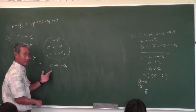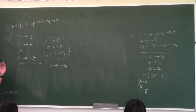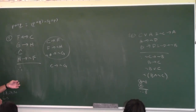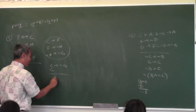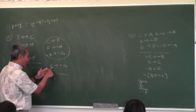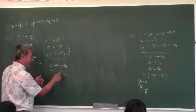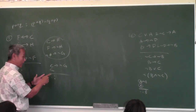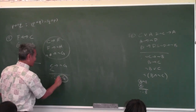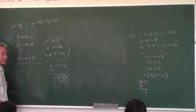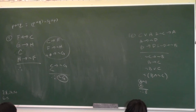C implies not G — what is this called? Law of syllogism. Now I have C implies not G, and I have C. Gorilla implies banana, gorilla, therefore banana. So the answer is: the goblins are not out.